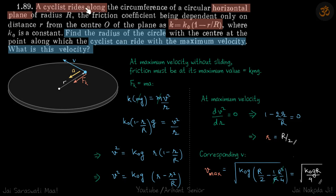We have a cyclist traveling in a horizontal plane where the friction coefficient varies with distance from the center as the function k = k₀(1 - r/R), where k₀ is a constant.